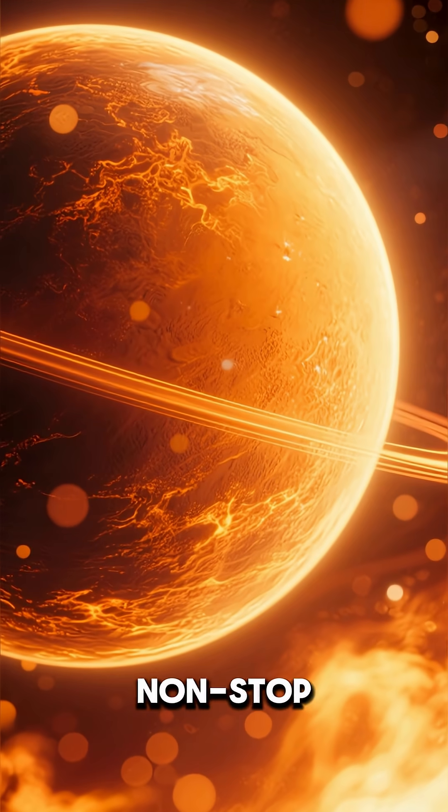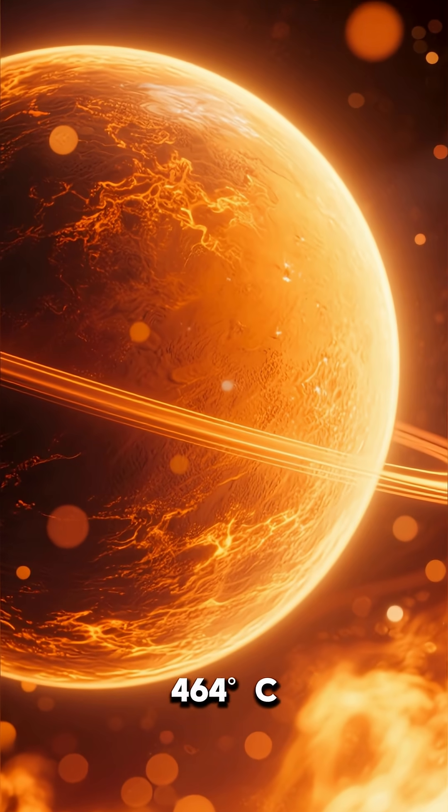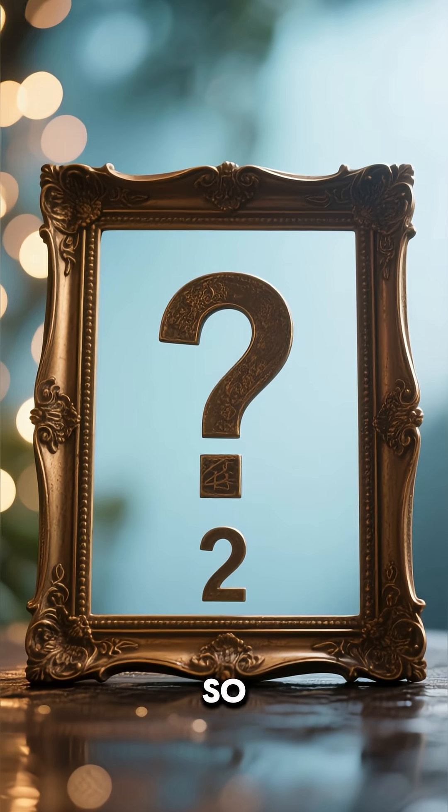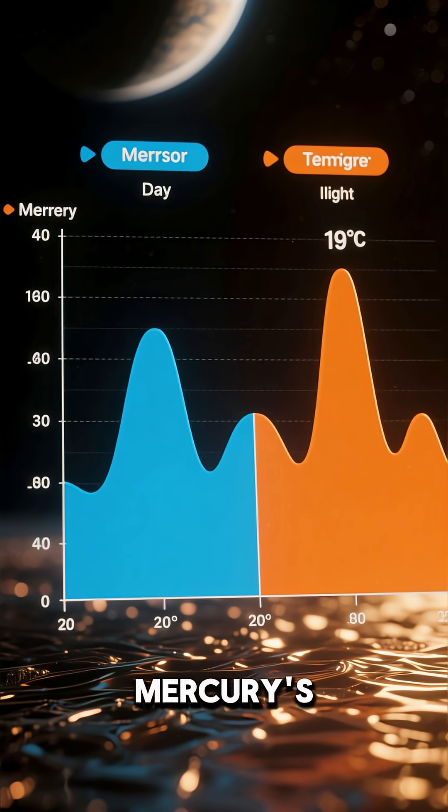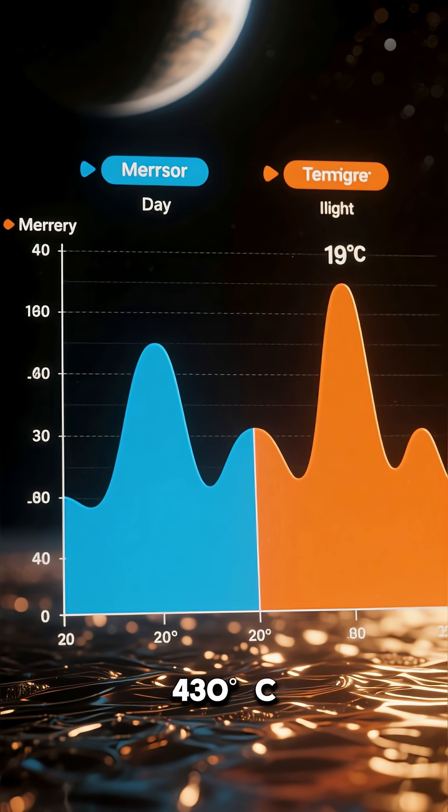The result is a non-stop, brutal 464 degrees Celsius everywhere on the planet. So let me say this again. Mercury's highest temperature is 430 degrees Celsius.